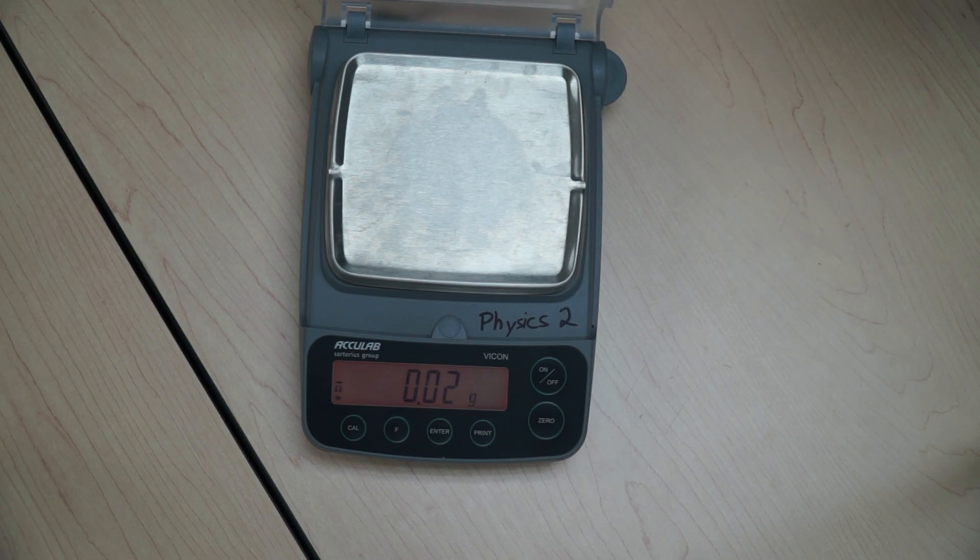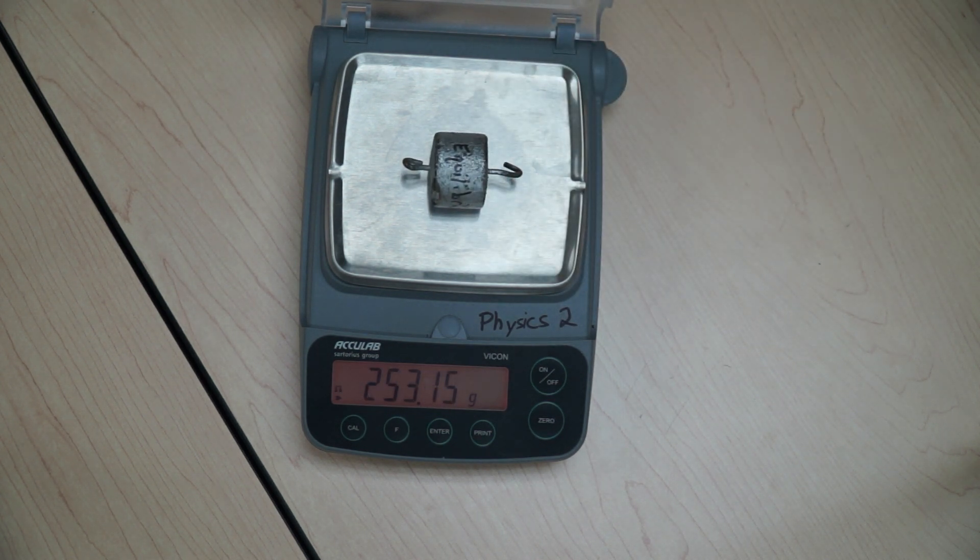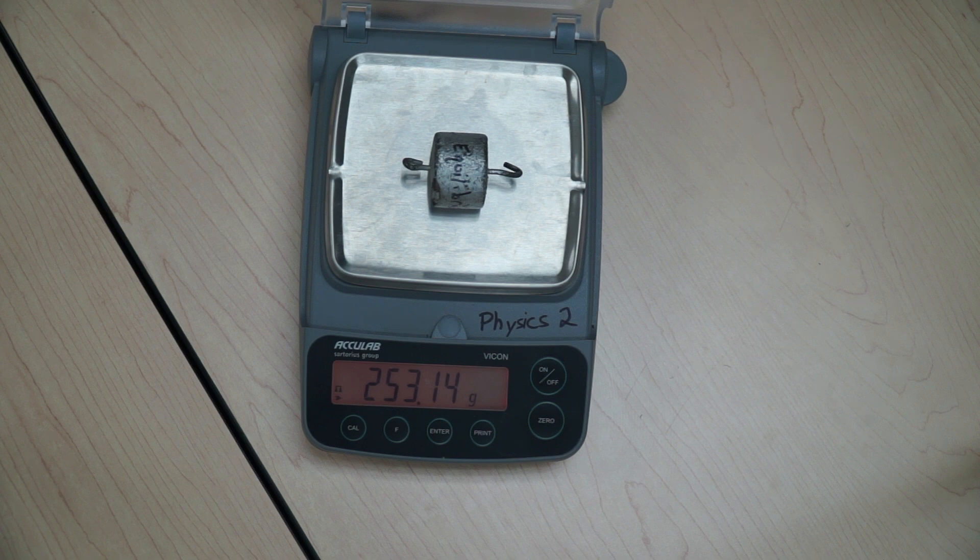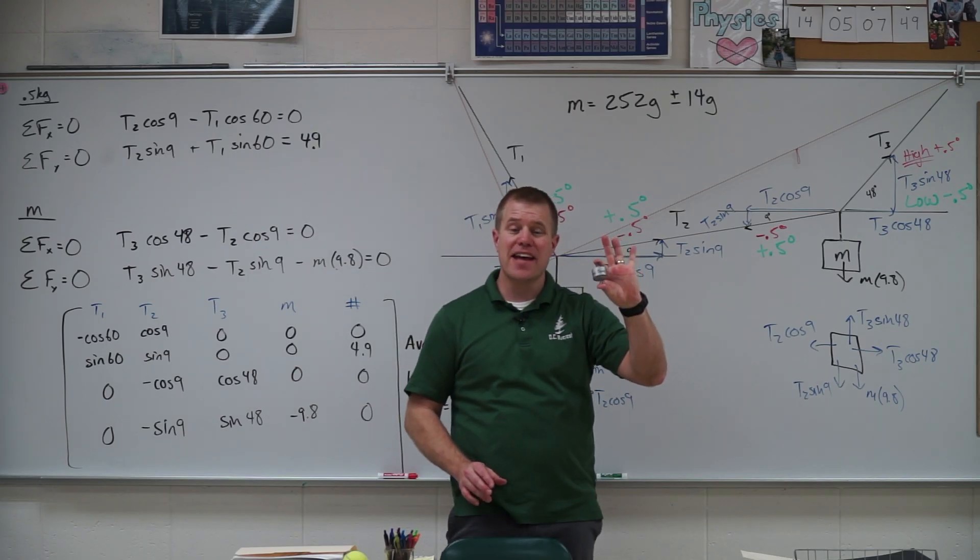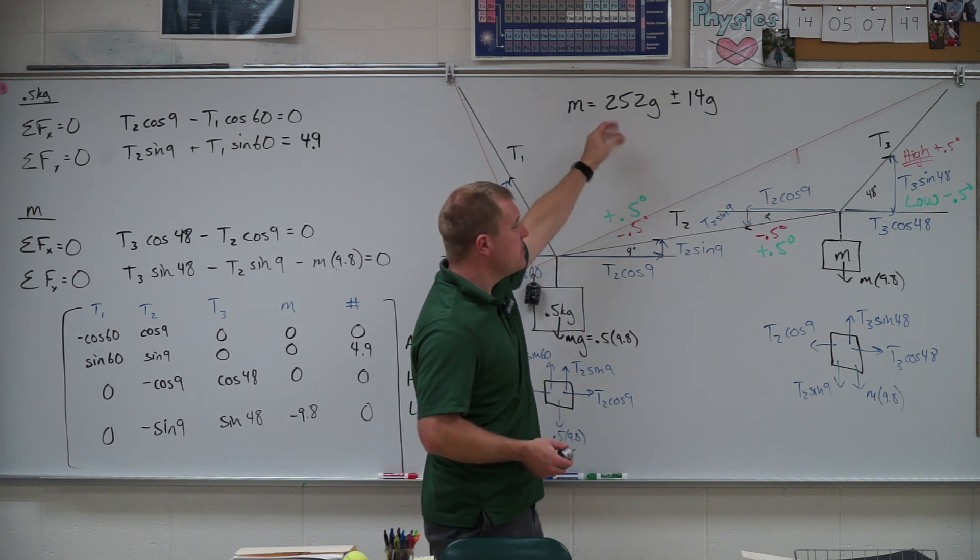Now there's going to be some percent error between the value I have here and the actual value of this mass. So let's go ahead and take this over to our mass balance and go ahead and mass it. All right, let's go ahead and toss this on the scale. See what we get here. Looks like about 253 grams. Perfect. All right, we got our mass. It was 253 grams-ish. So 253 grams. That's looking good.